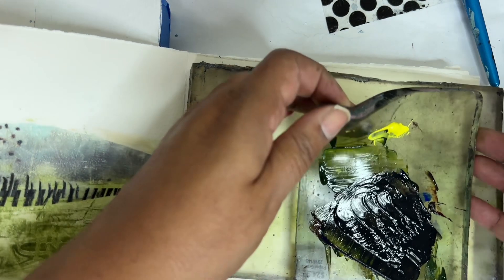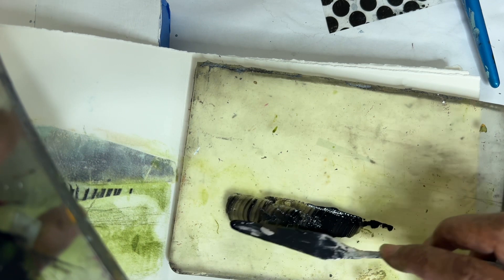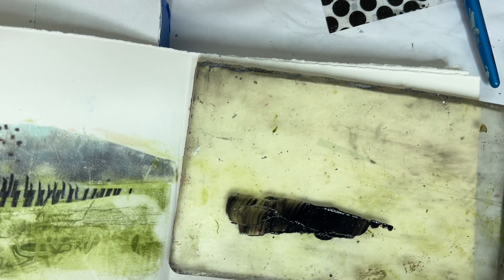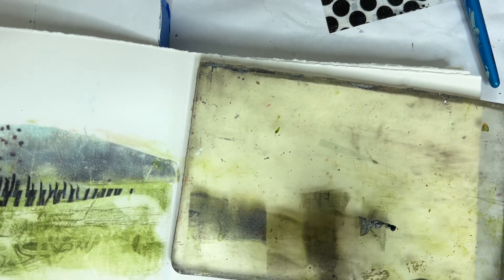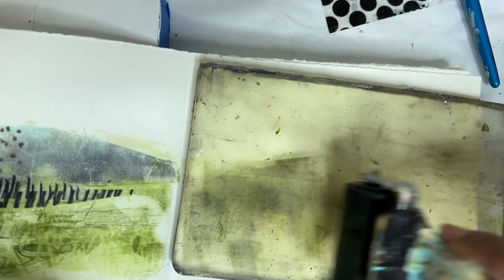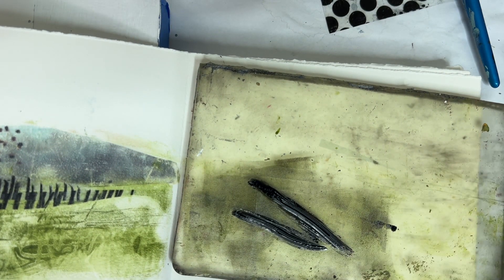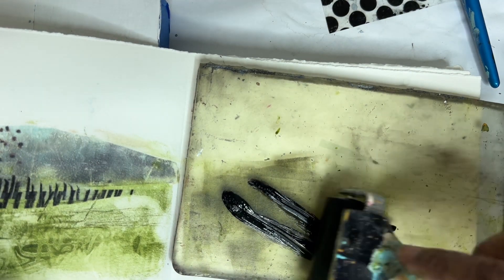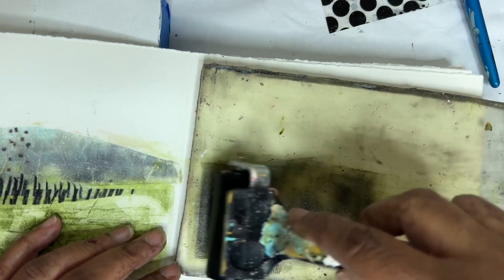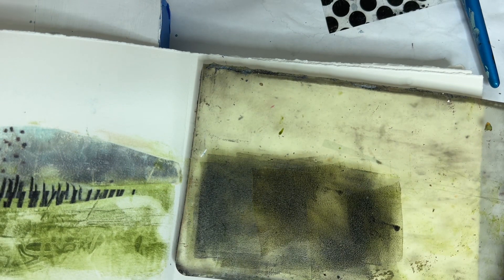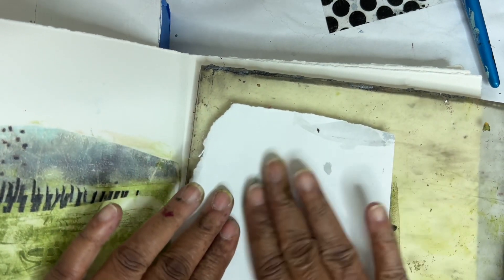I've mixed up some black here with the green, added in some alizarin crimson and some ultramarine blue. It's not really black. It's more of a just a really dark brown, but I think it's gonna work. Let's start printing. I've discovered that I really like using my small jelly plate as a palette, and I don't want these lines to be too bold. So, let's roll that out. We might need a little bit more paint than that.